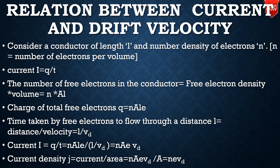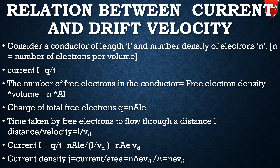Now we derive the relation between current and drift velocity. Consider a conductor of length L and cross-sectional area A. A potential difference is applied to create an electric field, causing electrons to drift with drift velocity V_D. The number of free electrons per unit volume is n. The total number of free electrons in the conductor is n times A times L.